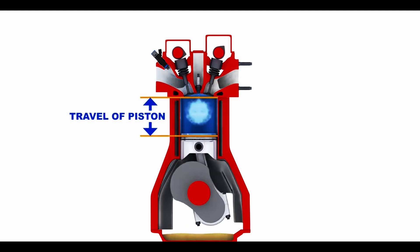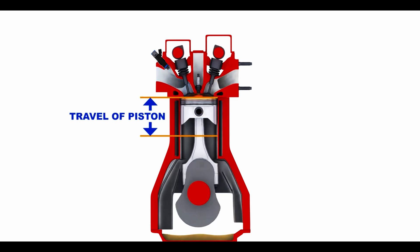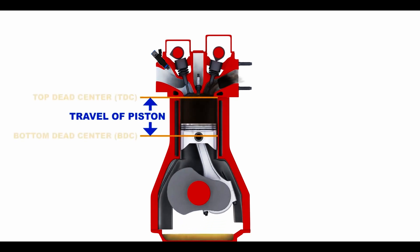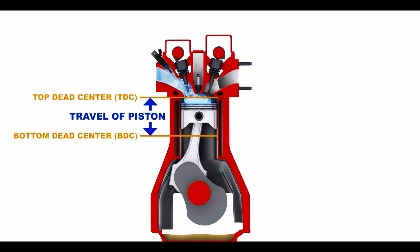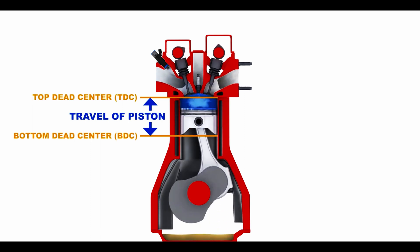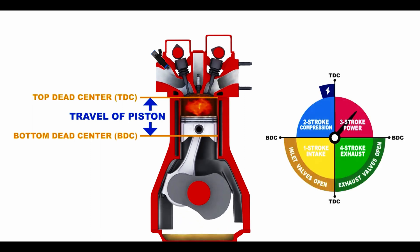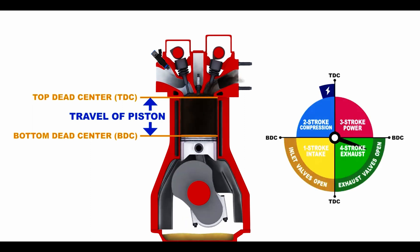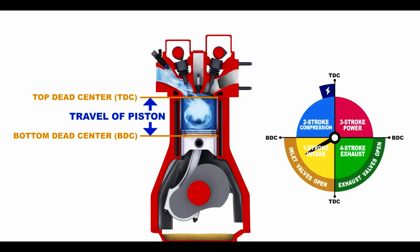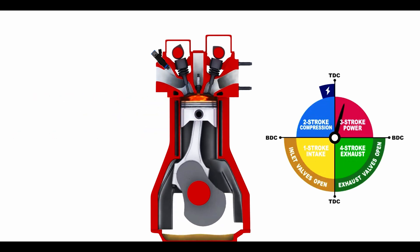The piston travels between two extreme positions known as the top dead center and the bottom dead center. Two-stroke engines exist as well, but they are rarely found in cars.